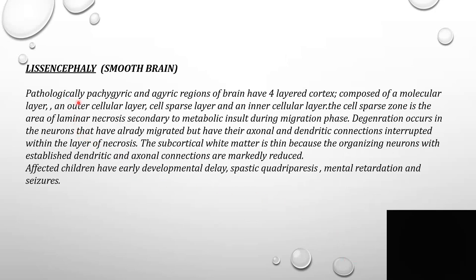Lissencephaly consists of a four-layered cerebral cortex instead of the normal six-layered cortex. There is a cell-sparse zone, which is an area of laminar necrosis secondary to metabolic insult during the migration phase. Degeneration occurs in neurons that have already migrated but have their axonal and dendritic connections interrupted within the layer of necrosis. The subcortical white matter is thin because the organizing neurons with established dendritic and axonal connections are markedly reduced.